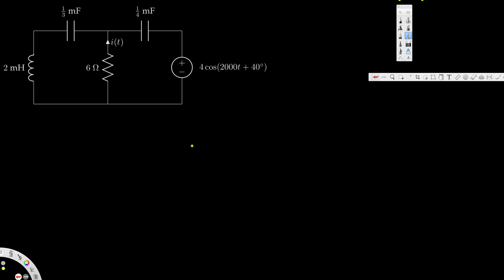In this video, we are going to see an example of sinusoidal steady-state analysis. In this particular problem, we have been asked to find out i(t), the current through this six-ohm resistor. This circuit is in time domain. What we are going to do is convert it into phasor domain, solve for this current, and then convert the current back into time domain. Let's go ahead and convert this one into phasor domain.